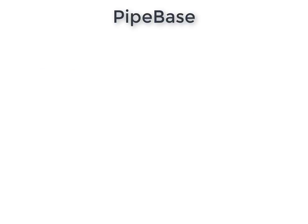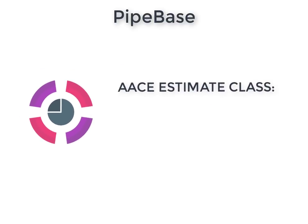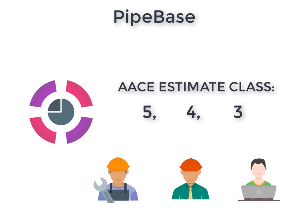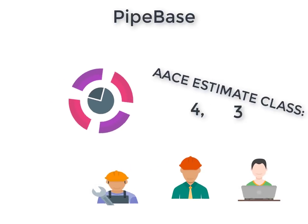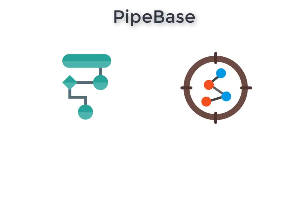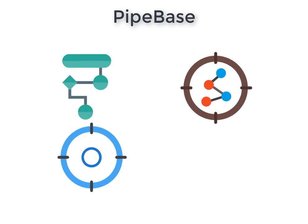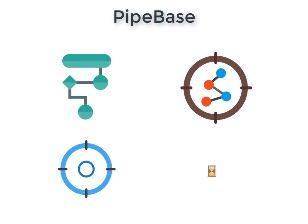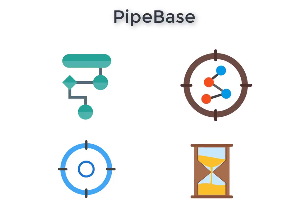PipeBase is suitable for class 5, 4 and 3 estimates, both for contractors, facility operators or their consulting firms. The knowledge base contains engineering algorithms for pipeline and equipment sizing, so it delivers unparalleled accuracy with minimum input from the estimator.